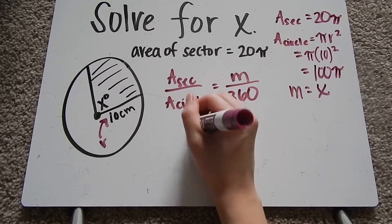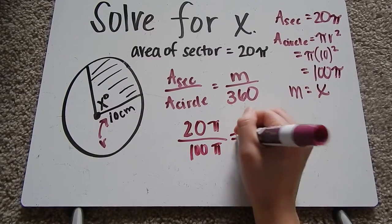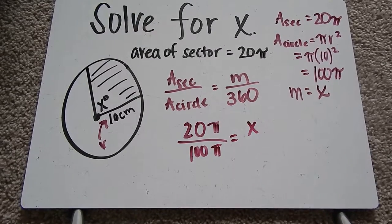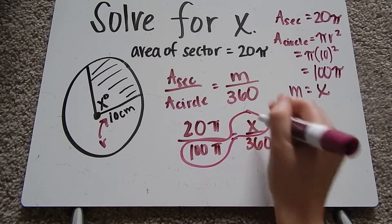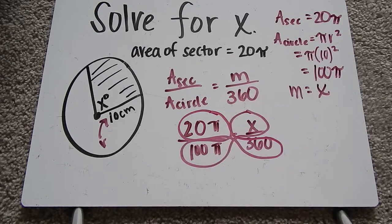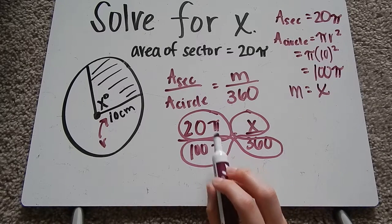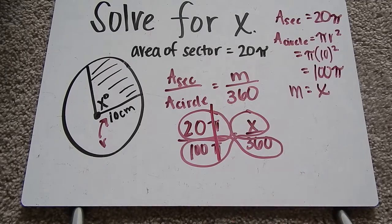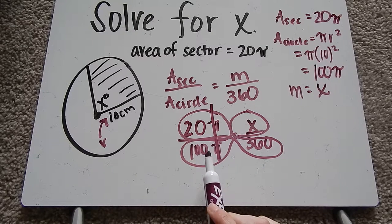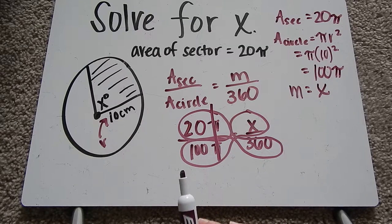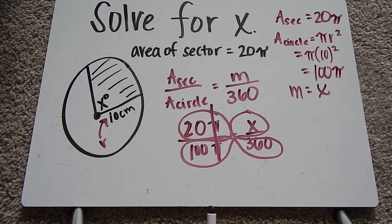So area of the sector is 20π. Area of the circle is 100π. If you want to, before you cross multiply, you see we have π over π. That's going to cancel out. So to make it a little easier, when you have π over π, they cancel out, so you can just eliminate those. So you're only working with numbers and then our one variable x.